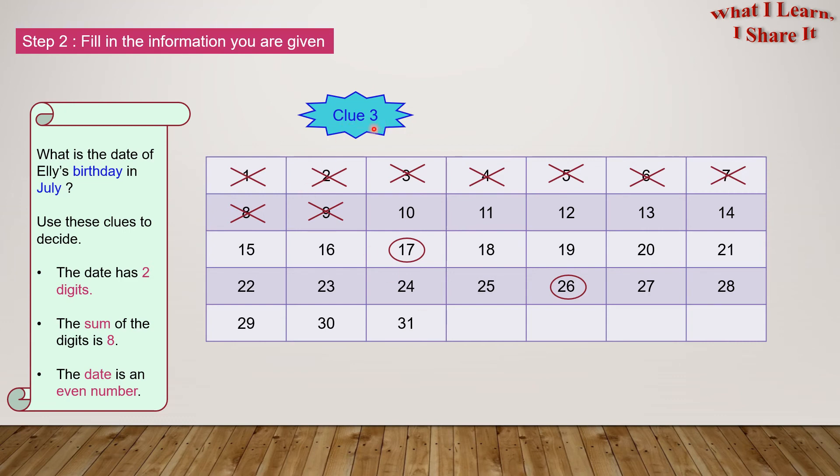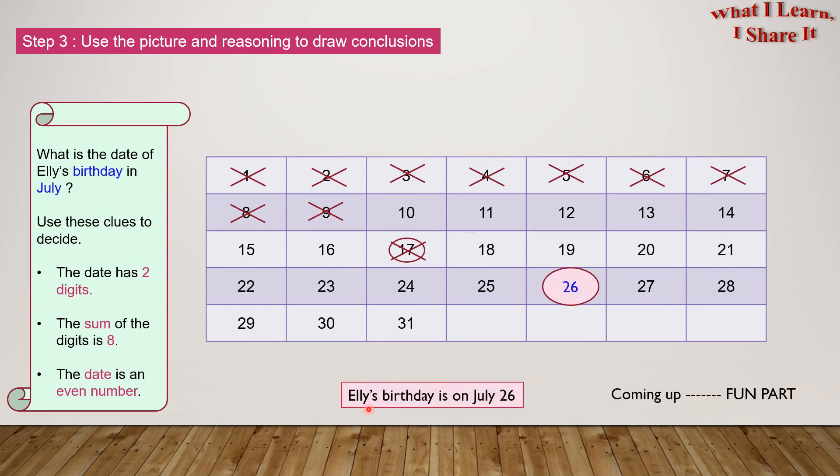Clue 3: The date is an even number. Is 17 an even number? No. So 26 is our answer. We've highlighted here. Ellie's birthday is on July 26th. Yay! We solved the problem.